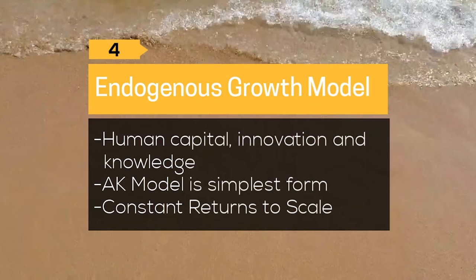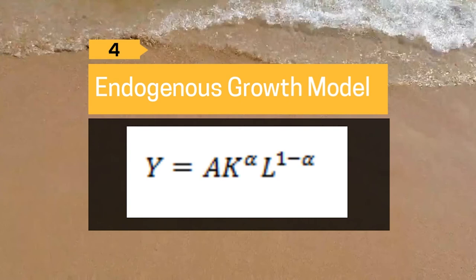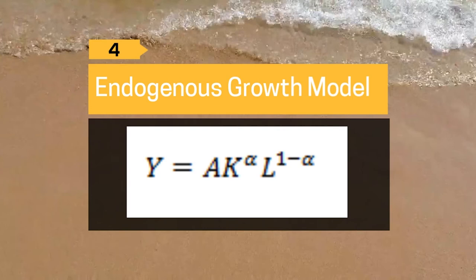The AK model production function is a special case of a Cobb-Douglas function with constant returns to scale. Here, Y is the total production in an economy, A is the total factor productivity, K is capital, L is labor, and alpha is the output elasticity of capital. For the special case where alpha equals 1, the function reduces to Y equals AK.